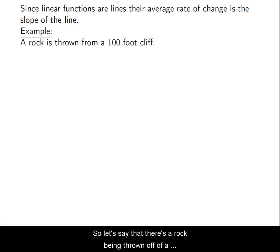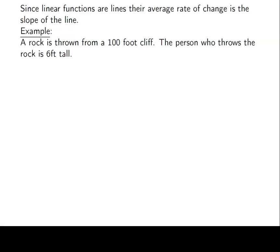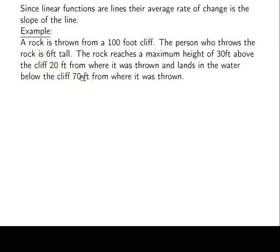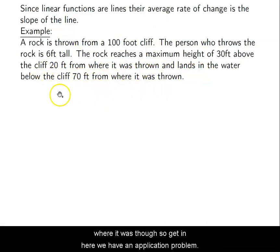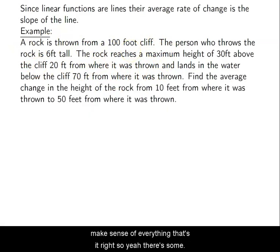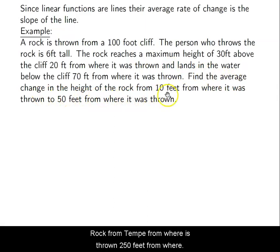So with that, let's do an example where we talk about average rate of change. Let's say that there's a rock being thrown off of a 100-foot cliff. The person who throws the rock is six feet tall. The rock reaches a maximum height of 30 feet above the cliff when it is 20 feet from where it is thrown, and it lands in the water below the cliff 70 feet from where it was thrown. We want to find the average change in the height of the rock from 10 feet from where it was thrown to 50 feet from where it was thrown.